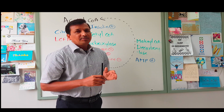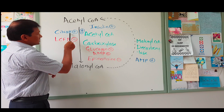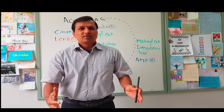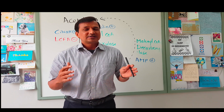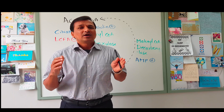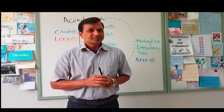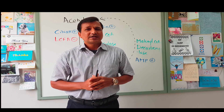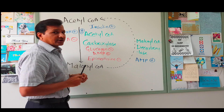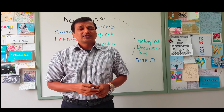Allosteric regulation is modulated by two molecules. Citrate is synthesized in the TCA cycle and moves out of the mitochondria into the cytoplasm via a citrate transporter. In the cytoplasm, citrate is broken down into acetyl-CoA and oxaloacetate by citrate lyase. Citrate acts as a positive modulator on acetyl-CoA carboxylase.